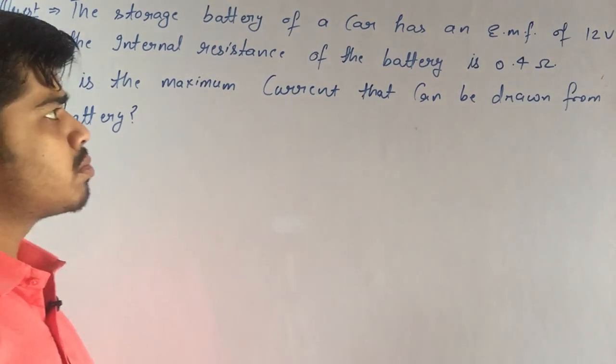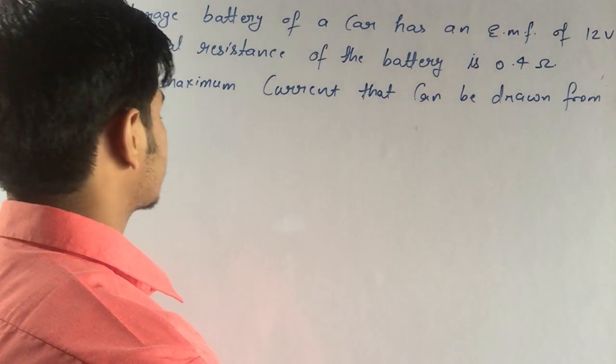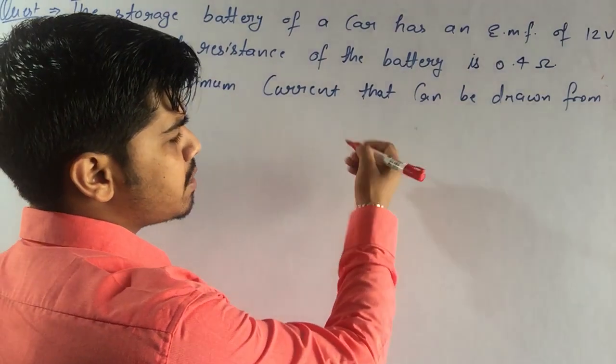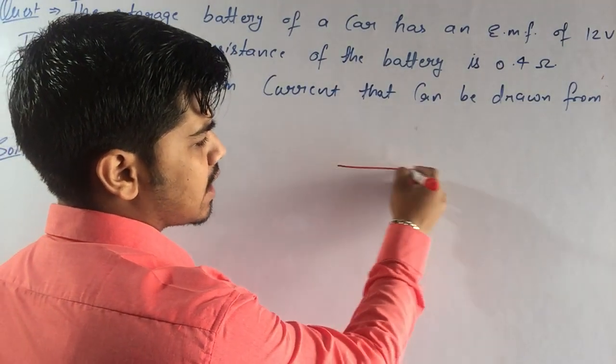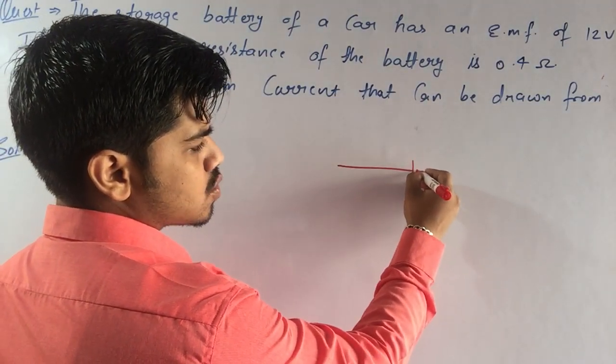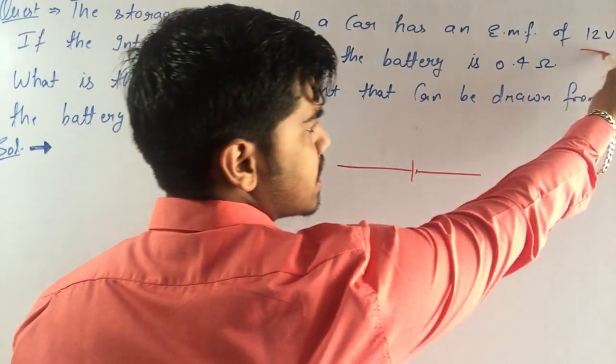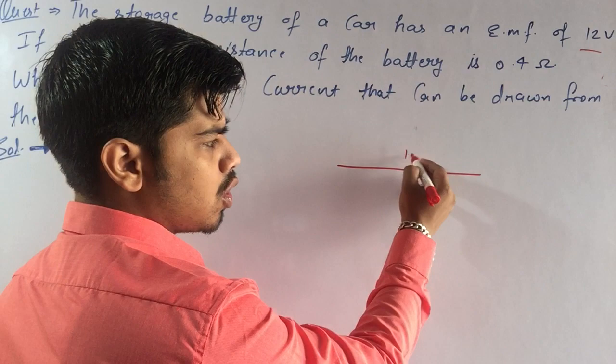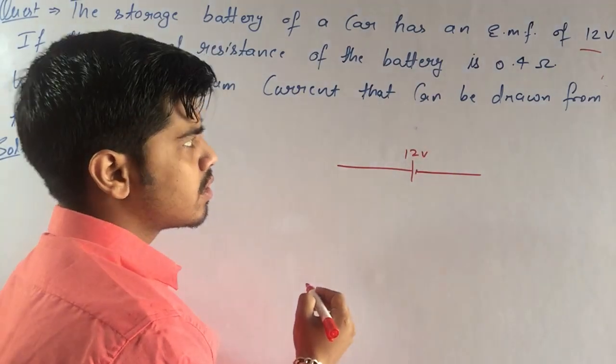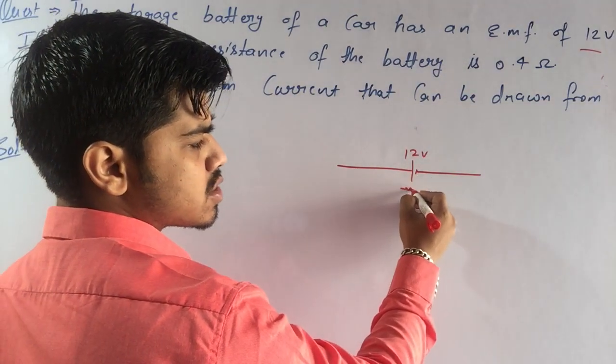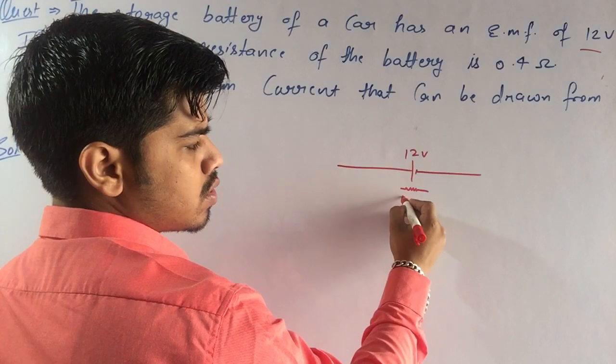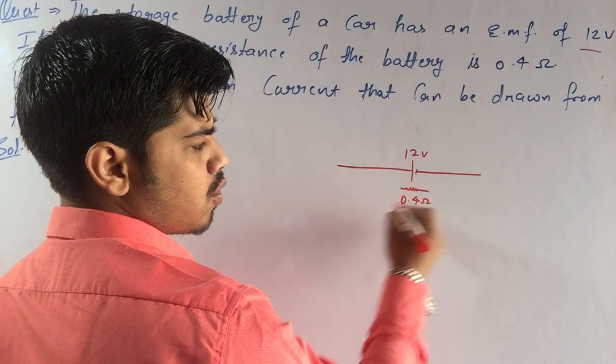Students, this is our first question from the chapter on current electricity, which is totally based on a cell. In this question, we are given that a cell of 12 volt EMF has an internal resistance of 0.4 ohm.